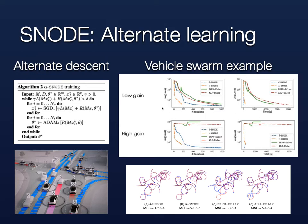To test robustness, we made the vehicle formation unstable by increasing the obstacle avoidance gain. In this case, our methods were the only ones able to learn the dynamics of the system at all. As you can see from the high-gain figure, both forward solvers and adjoint methods provided no robustness to instability in the data, while our methods continued to learn without problems even for the high-gain scenario.